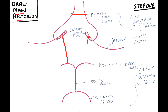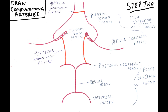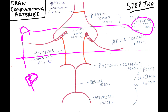The next step is to draw the communicating arteries. There are two communicating arteries: from the internal carotid artery arises the anterior communicating artery, which connects the anterior cerebral arteries, and the posterior communicating artery, which connects the internal carotid artery with the posterior cerebral artery. The Circle of Willis is divided into anterior circulation and posterior circulation.